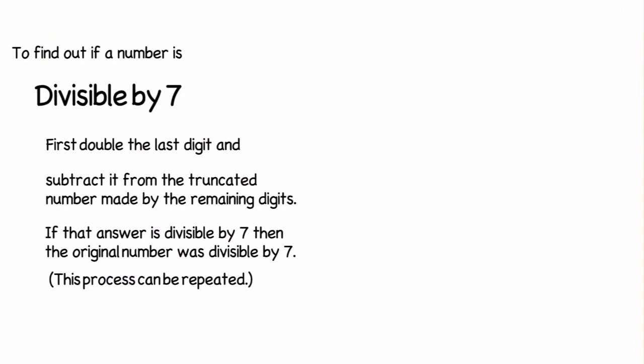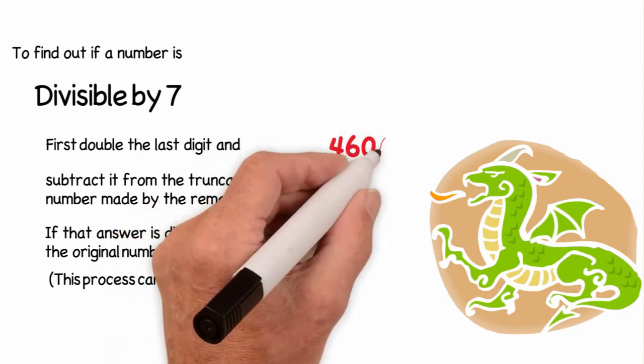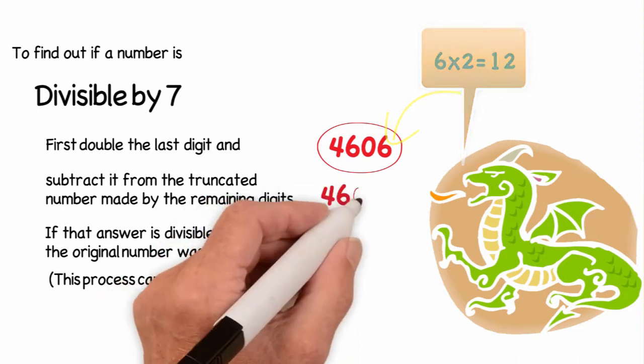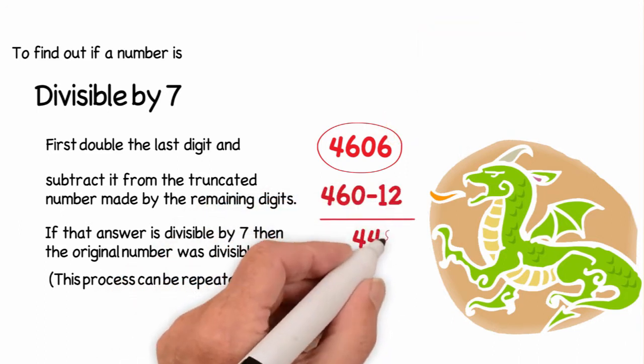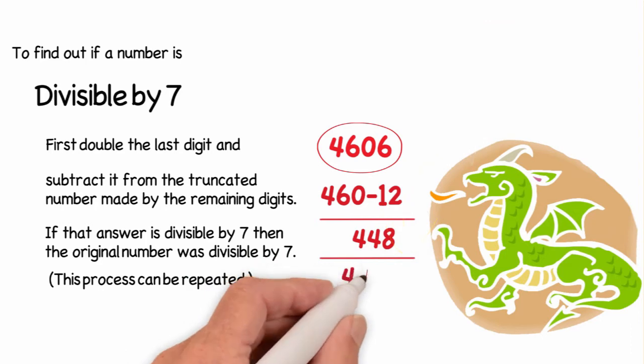Now we have the 7 divisibility method, which is slightly more complicated than all the others. Our example number is 4,606. What you first do is you double the last digit, getting 12, and subtract it from 460, getting 448. Then, you double 8, getting 16. Then you subtract 16 from 44, getting 28, which we all know is divisible by 7.